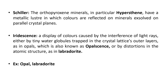Iridescence is a display of colors caused by interference of light rays, either by tiny water globules trapped in the crystal lattice, or as in the case of opals — known as opalescence — or it may also be caused by distortions in the atomic structure as seen in labradorite, which is a type of plagioclase feldspar. Excellent examples of iridescence are opal and labradorite.